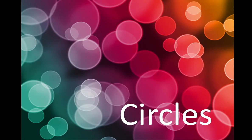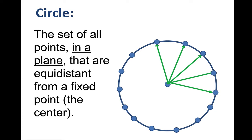We are in our unit about circles. We started talking about many things, so let's recap some of them here. A circle is the set of all points in a plane that are equidistant from a fixed point called the center. We have a center point and the collection of all the points, which are the circle, that are all the same distance from the center. That distance is the radius.